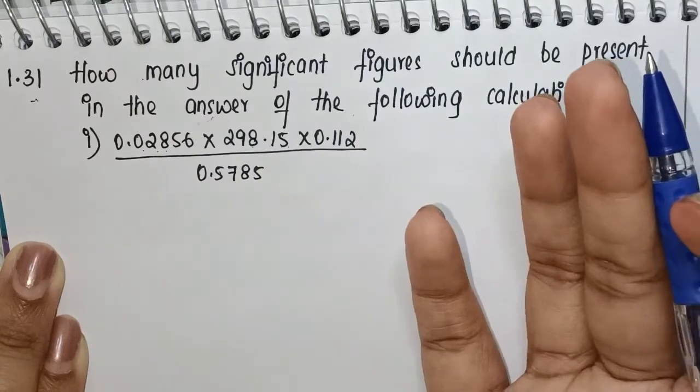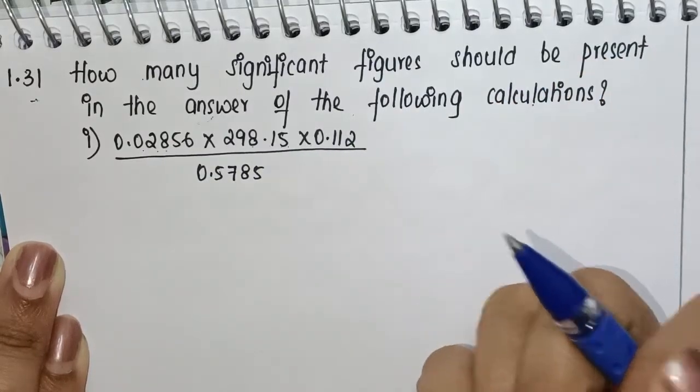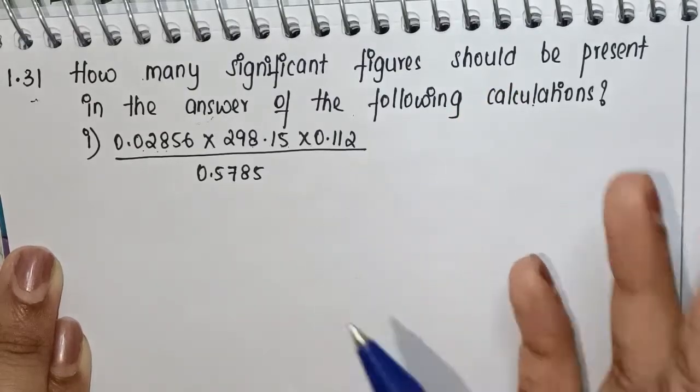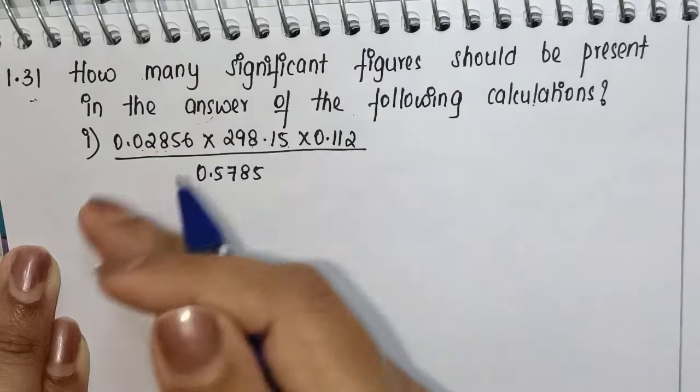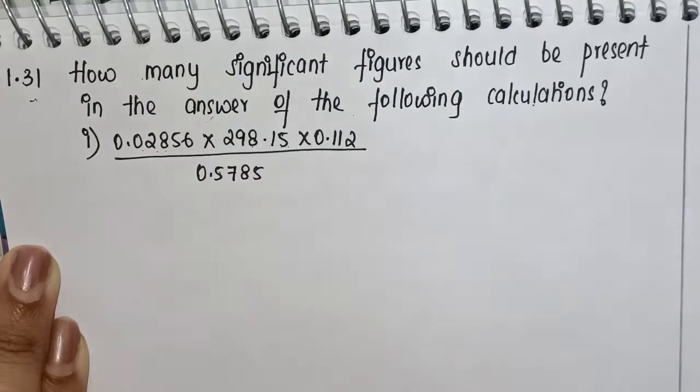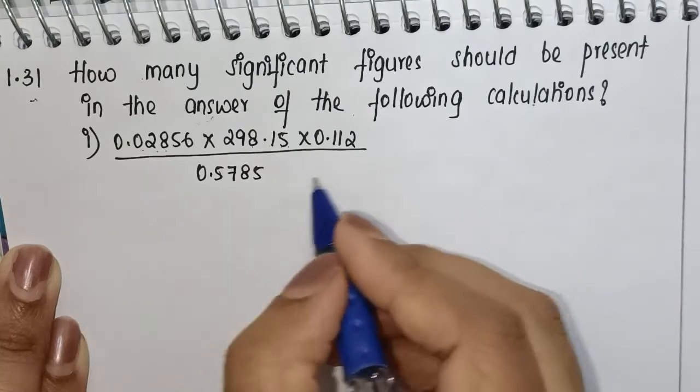There are two methods generally when we solve a problem like this. The normal method is by calculating this and getting your answer, then finding out what the significant figures are. The other method I will tell you.